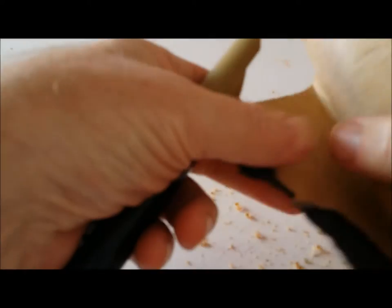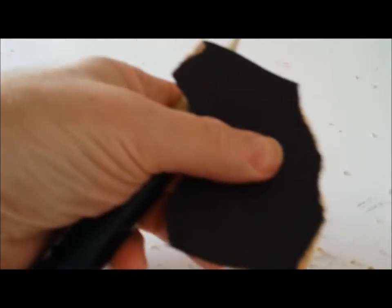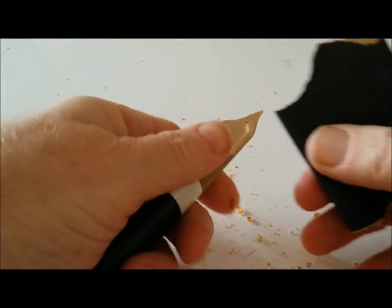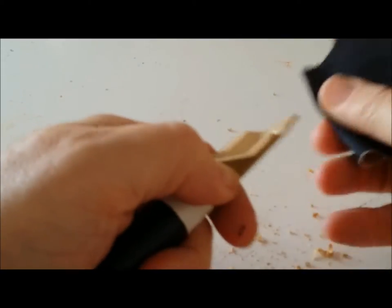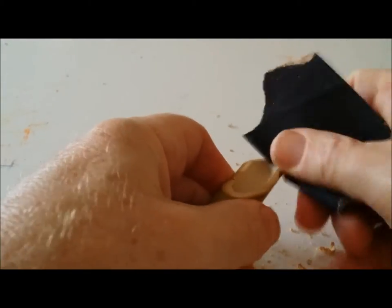If I want to smooth it out a little bit, I can take a little fine grade sandpaper. This may be a little too fine grade, but it's what I happen to have at the moment. And I can go in there and just smooth it out a little bit.